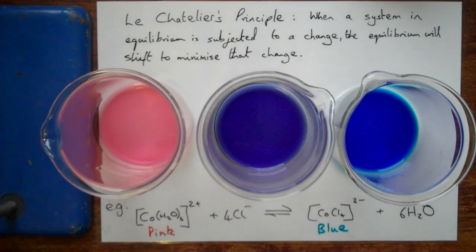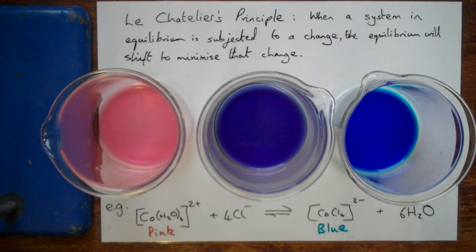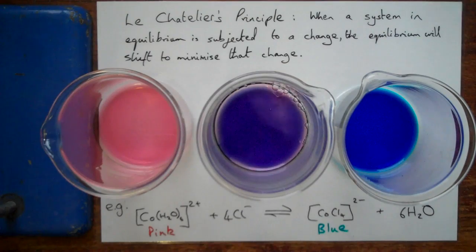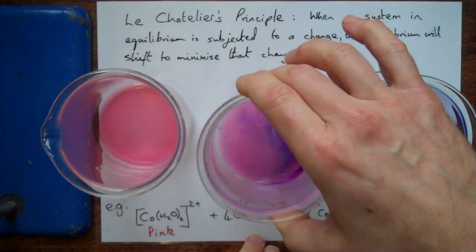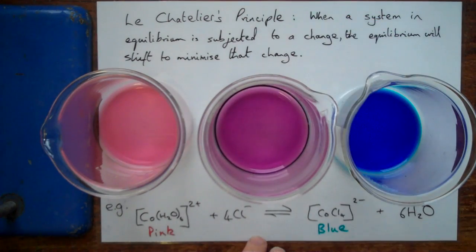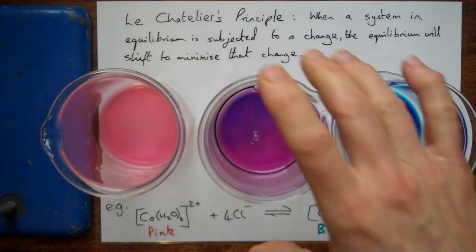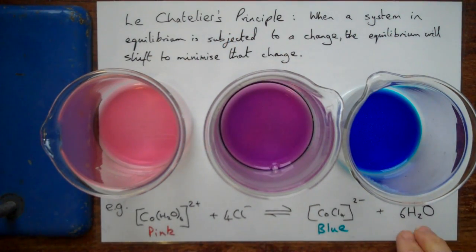We can reverse that reaction by adding some water. If I add a bit of water back — we're increasing the amount of water in our system — straight away you can see pink. It didn't take much water. We've already gone back towards the purple colour we started with, and we're very close to pink. So if we add more of the chemical on the left side — more chloride ions — it shifts towards the bluer side, to the right. If we add more water, it goes to the left. That is Le Châtelier's principle in action.